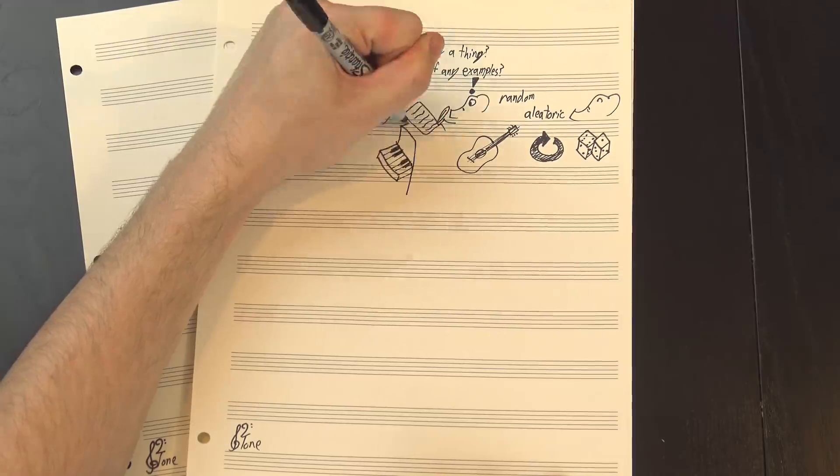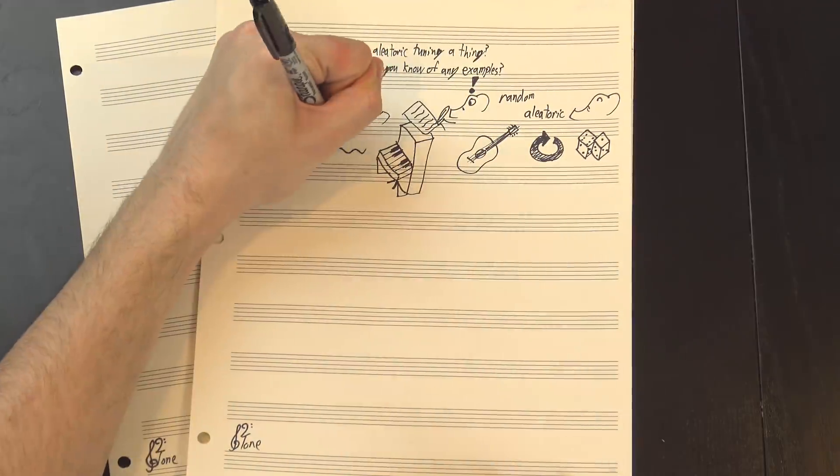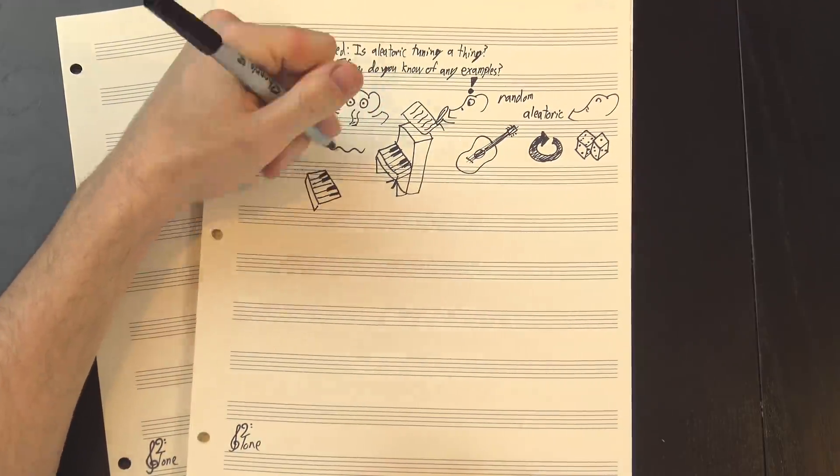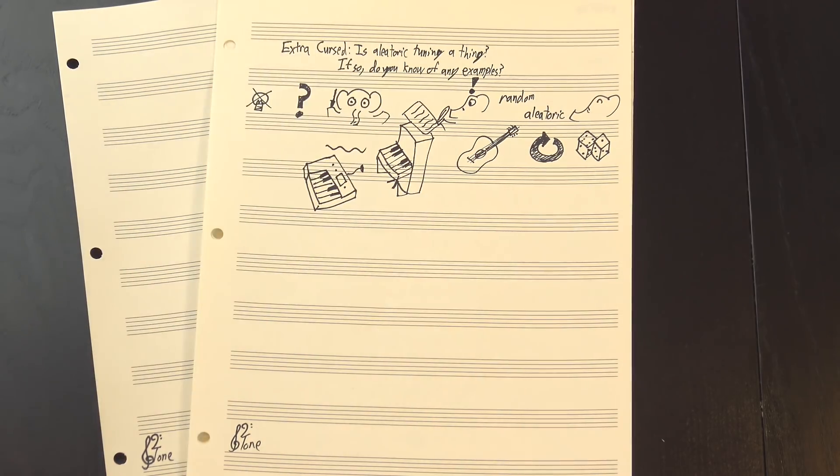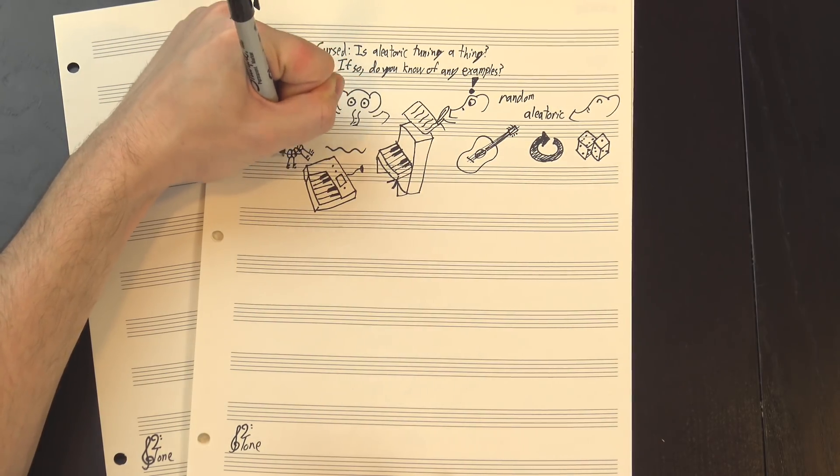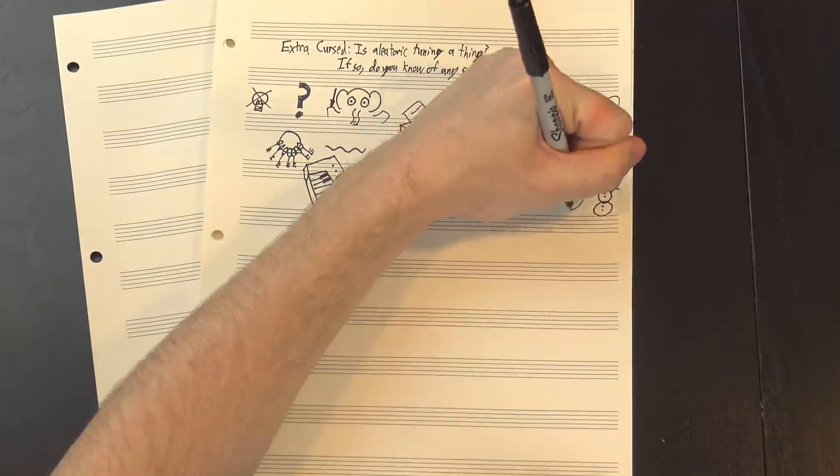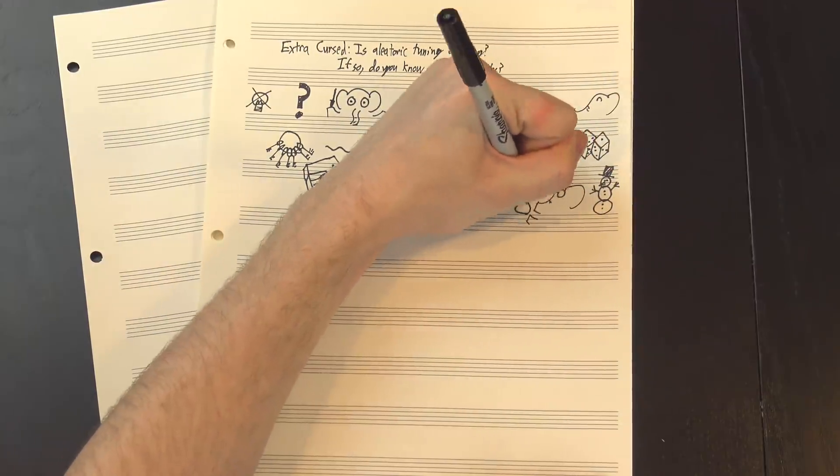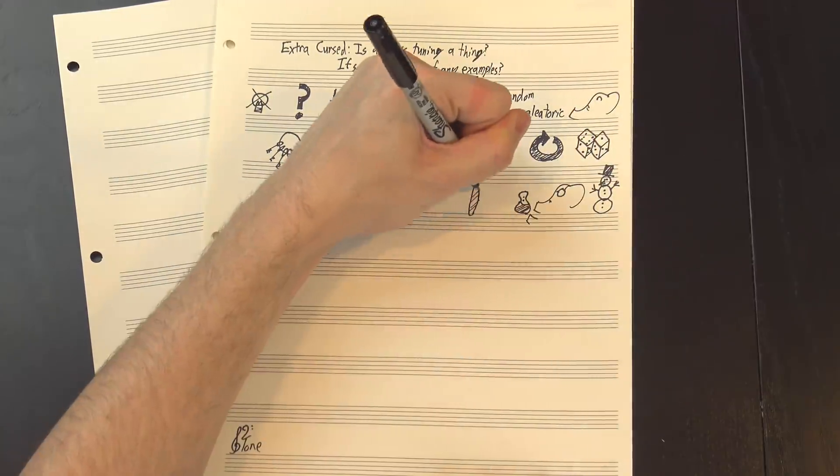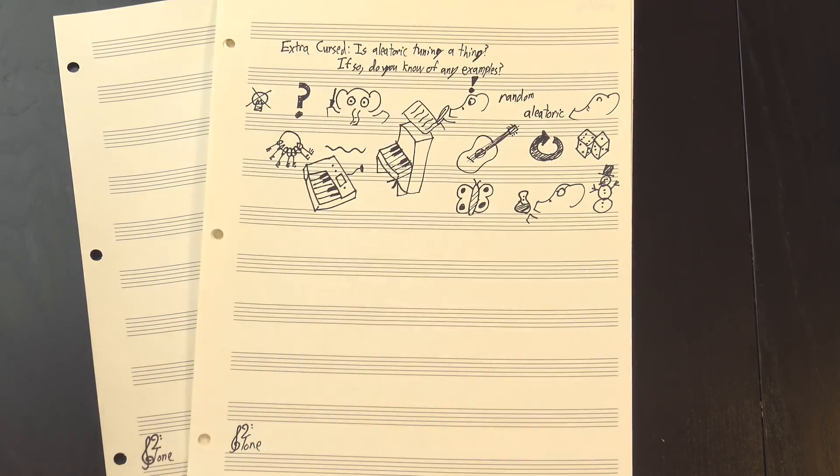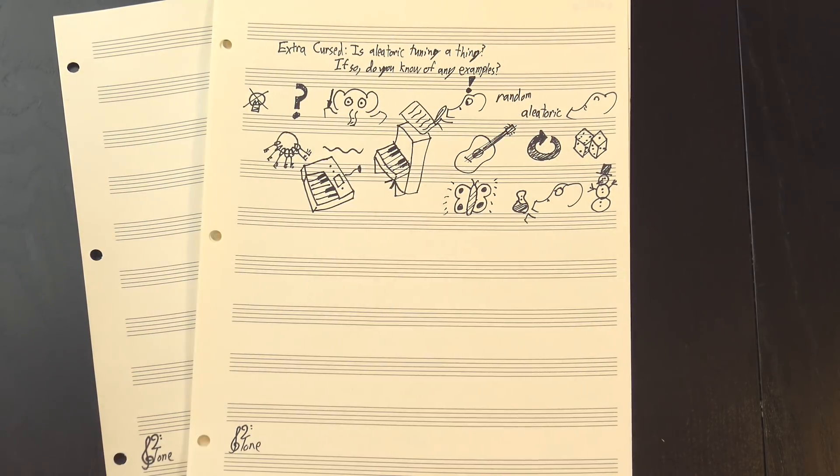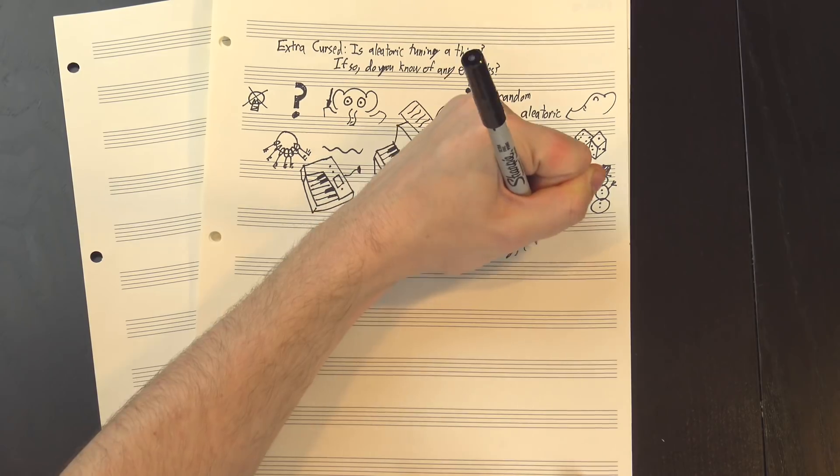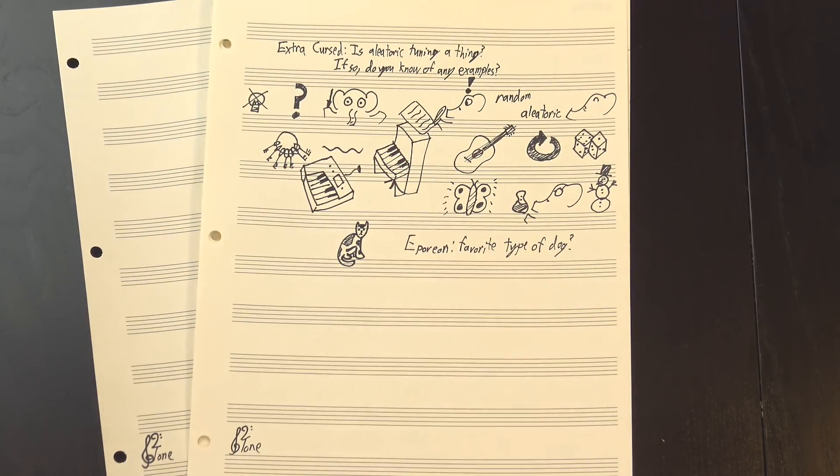The harmony is often fairly straightforward, of course, but being a good song is about more than just having complex harmony. Punk uses simple tools because it wants to be blunt and accessible, and if it was full of weird jazz chords, I don't think it'd be able to do that nearly as well. Although, if someone wants to reharmonize the sex pistols with jazz chords and send me the results, I'd love to hear it. Next! Extra cursed asked, is aleatoric tuning a thing? If so, do you know of any examples? I don't know any examples, but I really hope it exists.